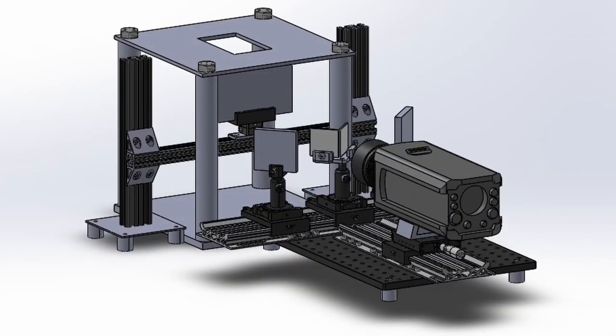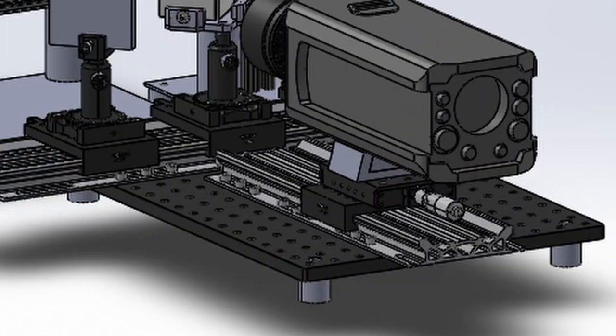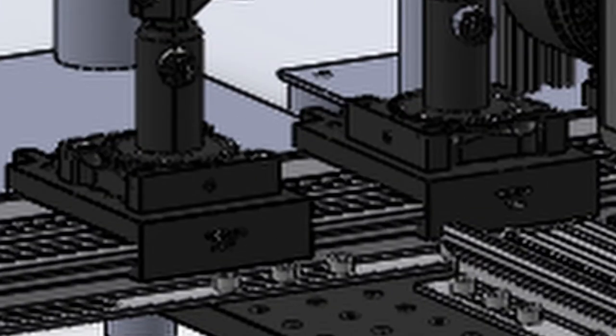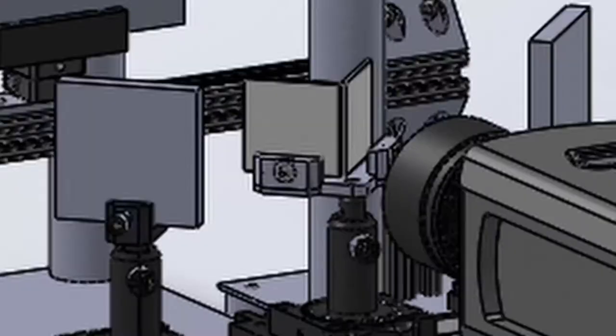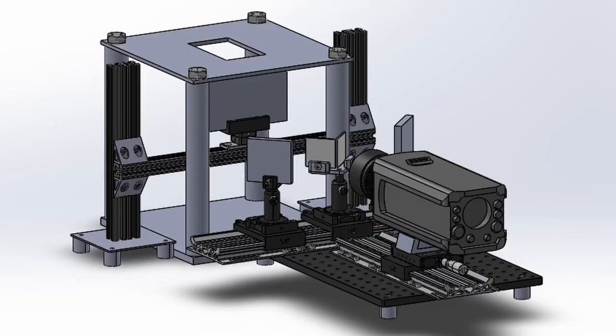Shown here is the assembly model of the setup. It uses optomechanical components such as an optical breadboard, rails, translation stages, posts, and mirror mounts. This allows the setup parameters to be easily modified in accordance to the requirements for the experiment.